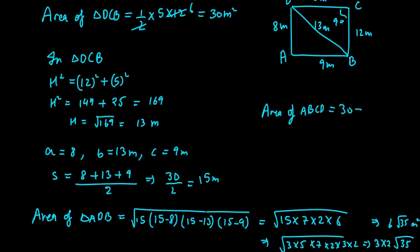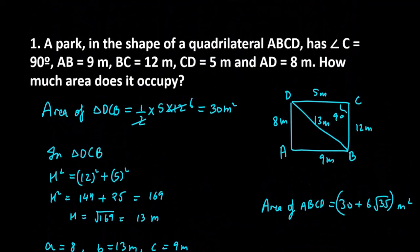The total area of quadrilateral ABCD will be 30 plus 6 root 35. This is the answer for the first question. Now we will be moving to the next one, the second question.